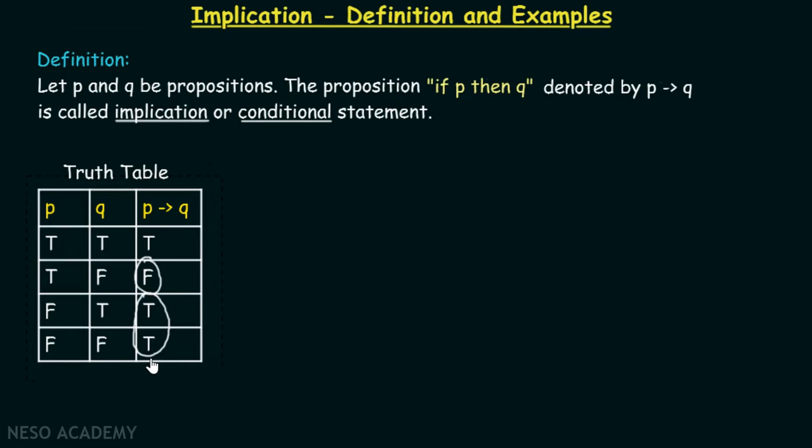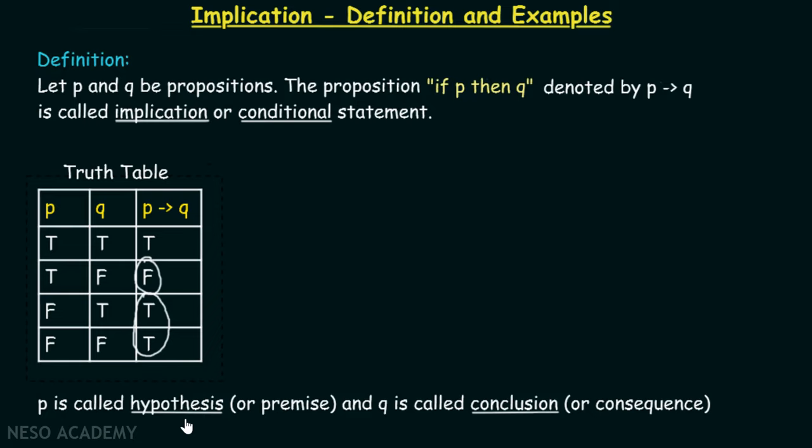When P is false, P implies Q would always be true. This is the most important point to understand in implication. We can understand this with examples. Also note: P is called the hypothesis or premise, and Q is called the conclusion or consequence.